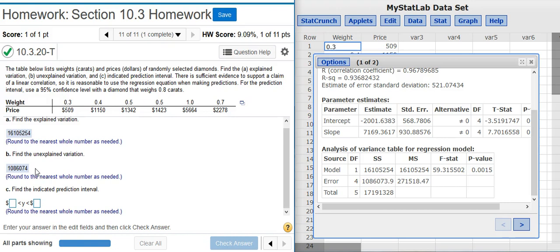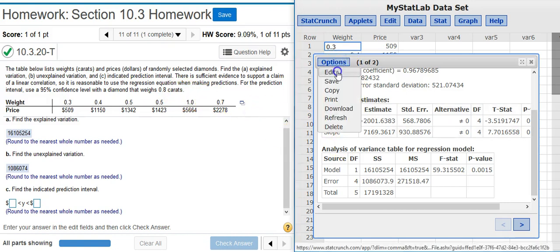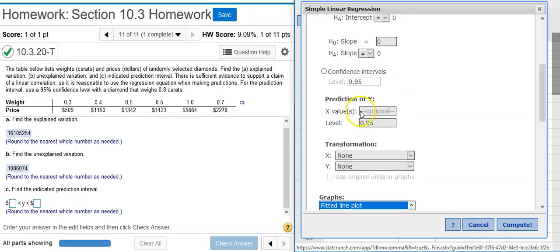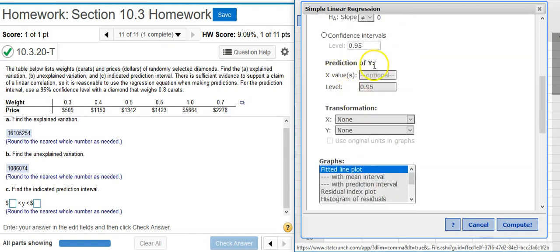And now, part C asks us to find the indicated prediction interval. The prediction interval we need to find is explained here in the problem statement. For the prediction interval, use a 95% confidence level with a diamond that weighs 0.8 carats. So, to get that, I need to come back here to my options window and scroll down to this area labeled prediction of Y.